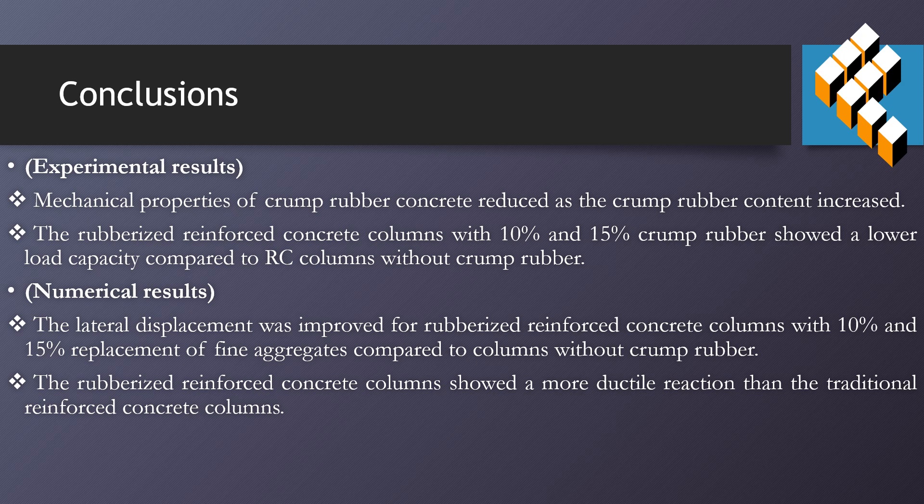Experimental results showed that the mechanical properties of crumb rubber concrete reduced as the crumb rubber content increased. Rubberized reinforced concrete columns with 10% and 15% crumb rubber showed a lower load capacity compared to the reinforced concrete column without crumb rubber.